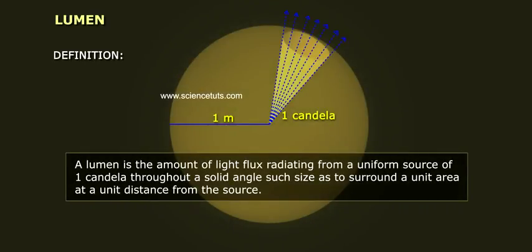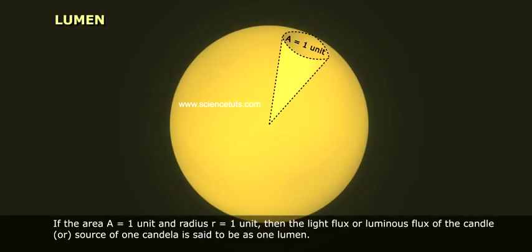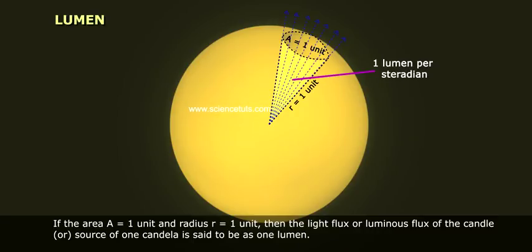Definition: Lumen is the amount of light flux radiating from a uniform source of one candela throughout a solid angle such size as to surround a unit area at a unit distance from the source. If the area A equals one unit and radius R equals one unit, then the light flux or luminous flux of the candle or source of one candela is said to be as one lumen.